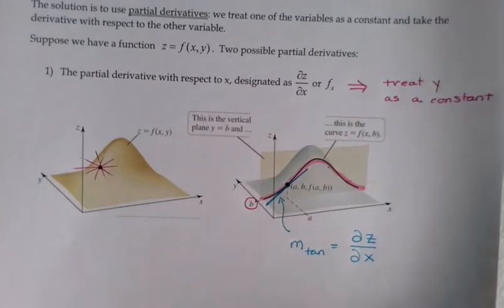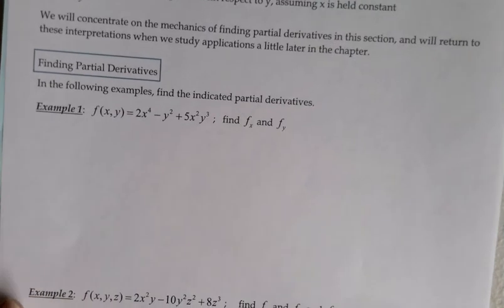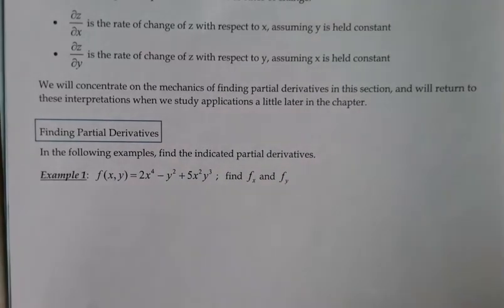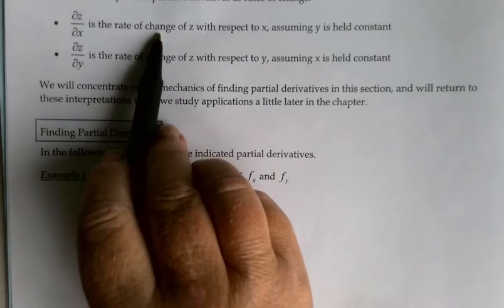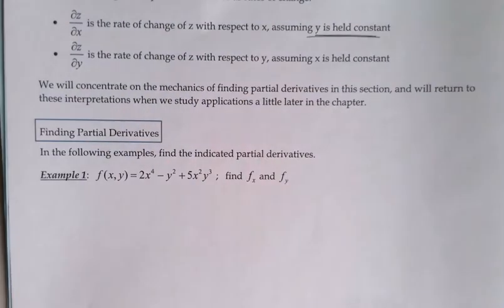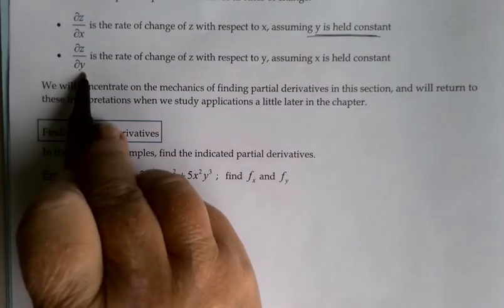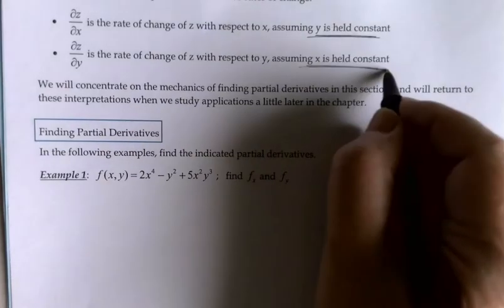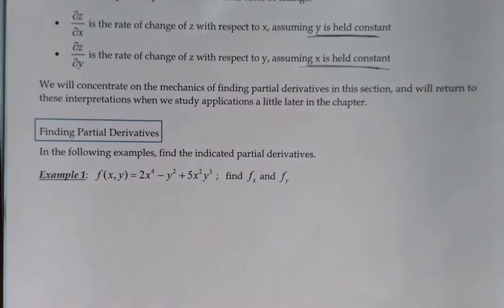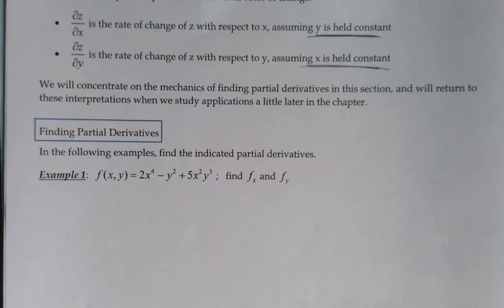Another interpretation for derivatives we used frequently was the idea of the derivative as the rate of change, and we can use that for partial derivatives too. The partial derivative of z with respect to x is how fast z is changing with respect to x, assuming y is held constant. The partial derivative of z with respect to y is the rate of change of z with respect to y, assuming x is held constant. In this section we're mostly going to concentrate on the mechanics of finding partial derivatives, and we'll return to these interpretations when we study applications later in the chapter.